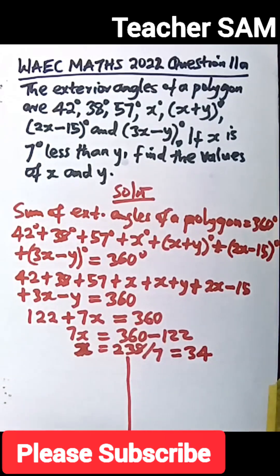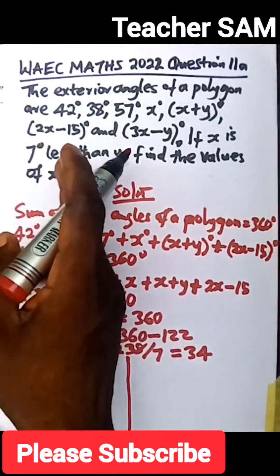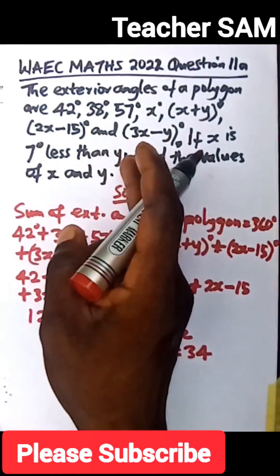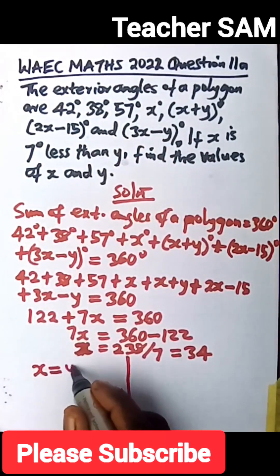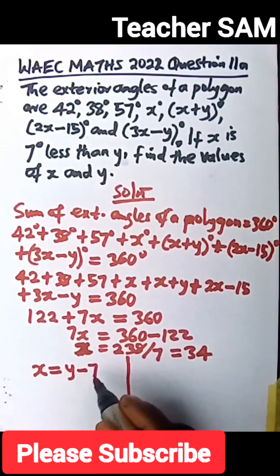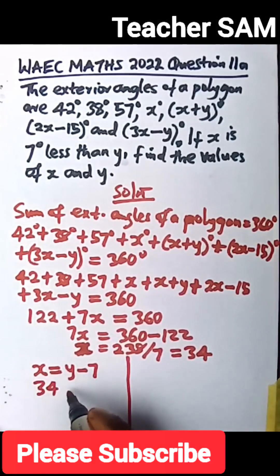So that is the value of x. Now let's go to this next statement. The next statement says if x is 7 degrees less than y, that means x will be equal to y minus 7 degrees. And our x is 34, so this is 34, is equal to y minus 7.